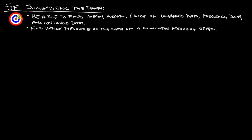Hello, this is Mr. Sandsbury. I'm going to go over the five F notes on summarizing the data with you. At the end of this, you should be able to find the mean, median, and mode of ungrouped data, frequency data, and continuous data. And then you should also be able to find various percentiles of the data on a cumulative frequency graph.